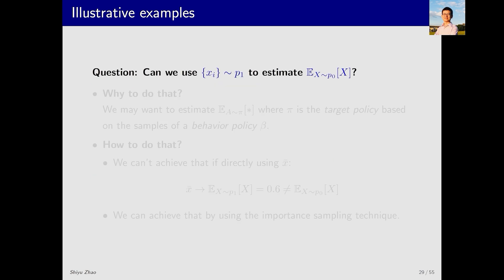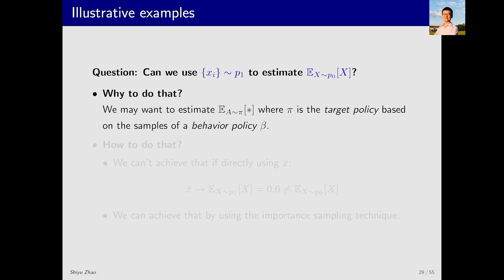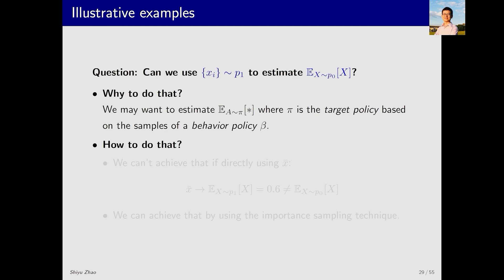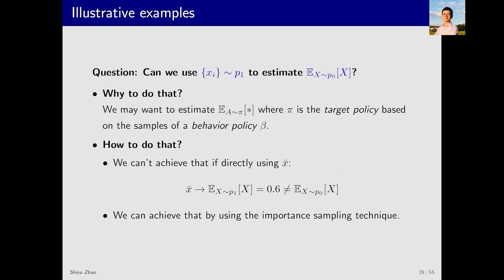Our goal here is: suppose we generated some samples from distribution p1, we want to use these samples to estimate the expectation under p0. Why? Because we want to perform off-policy learning. In off-policy learning there is a behavior policy beta — corresponding to p1 — which generates the data, and a target policy pi — corresponding to p0 — under which we want to estimate the expectation. If we simply average the samples, the result converges to the expectation under p1, not p0. Therefore we need to use importance sampling.